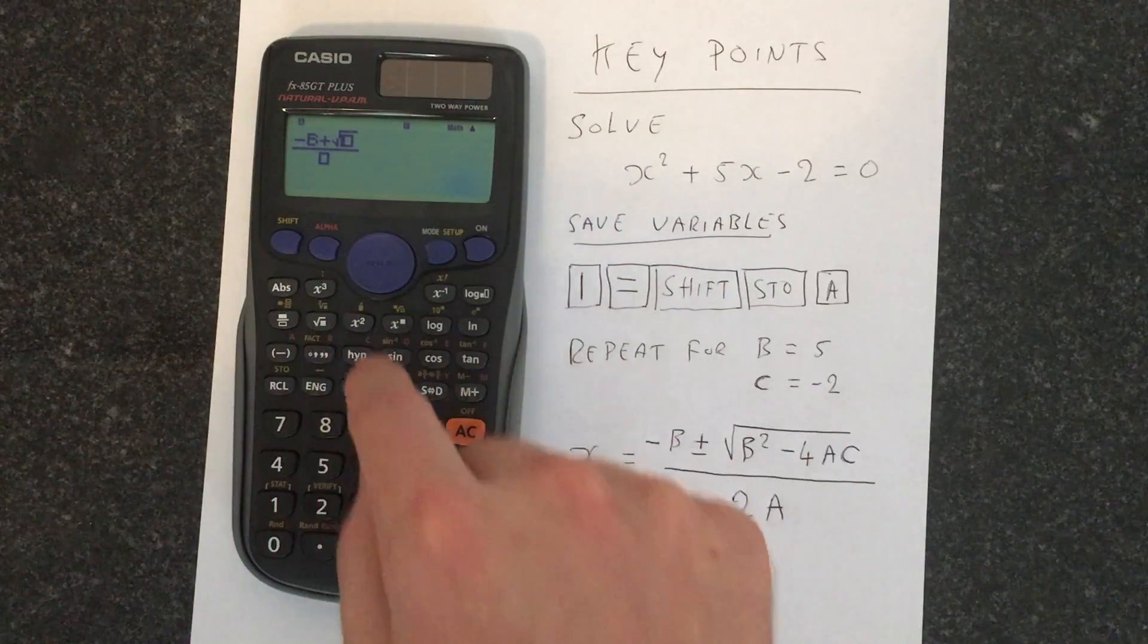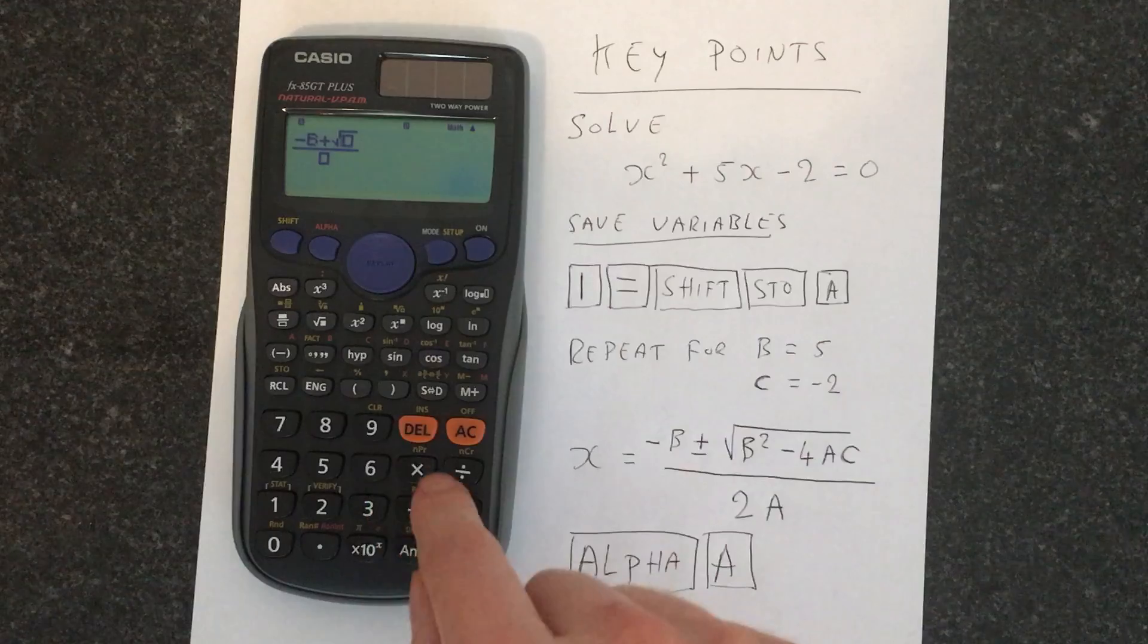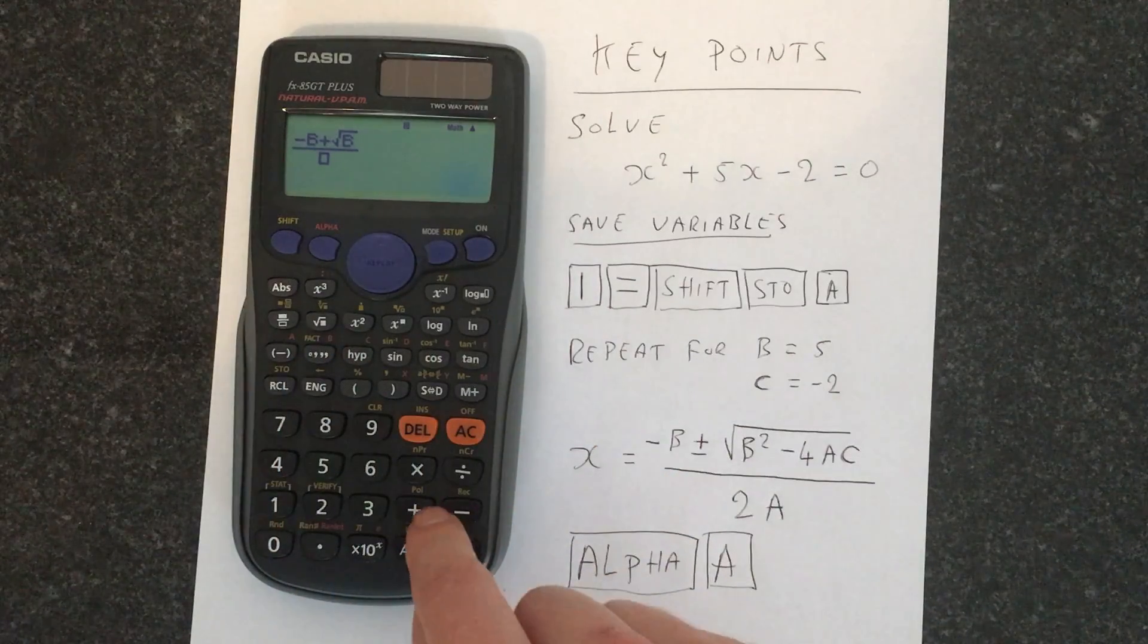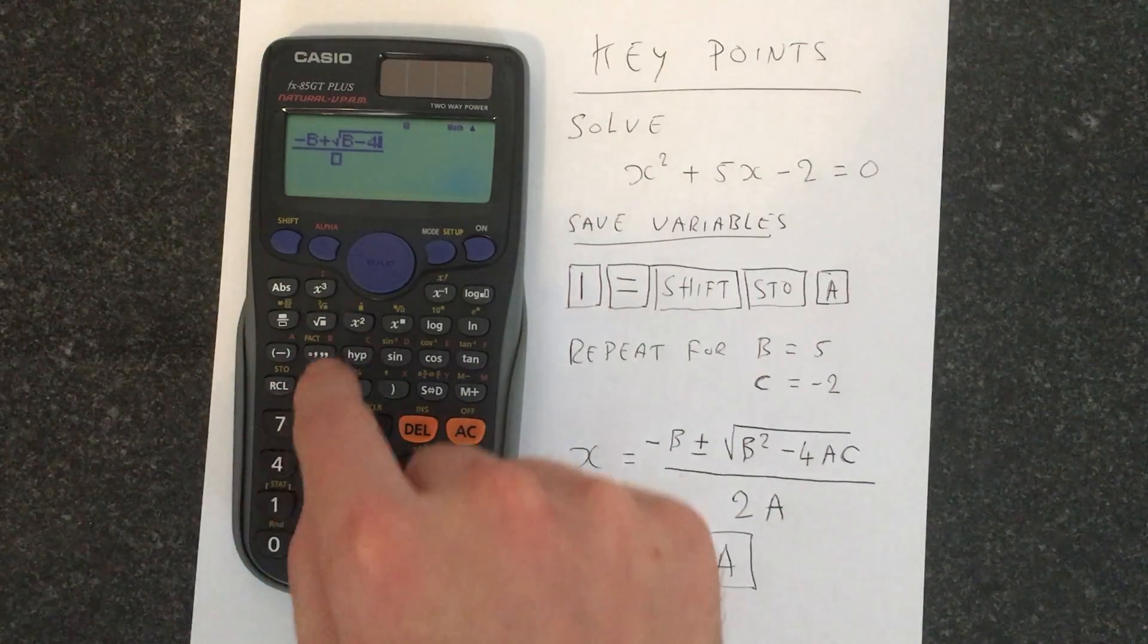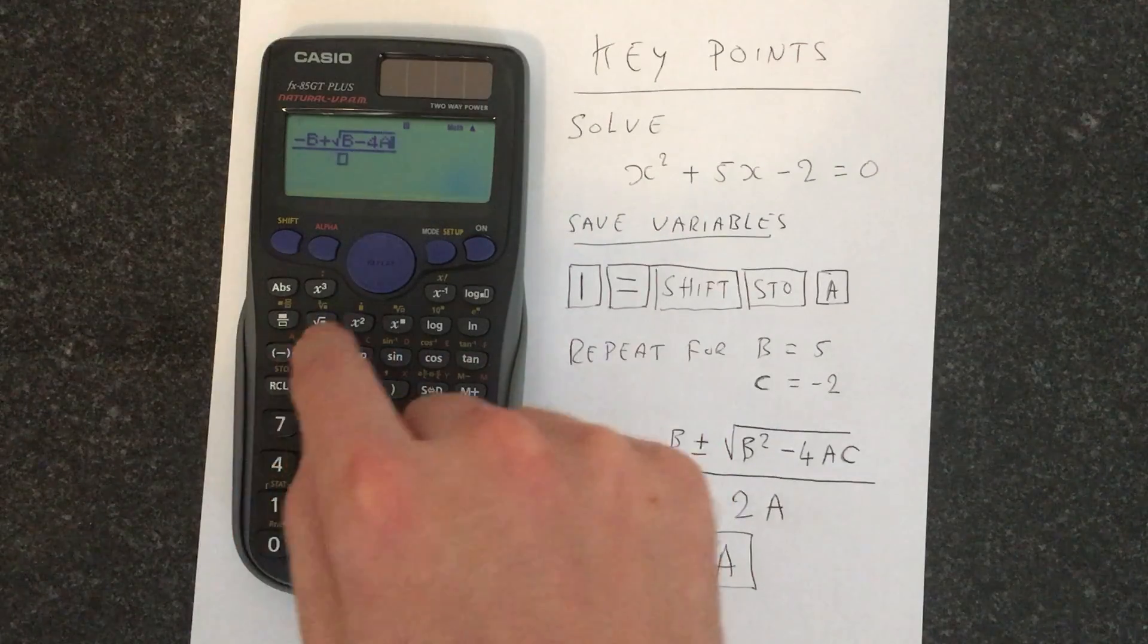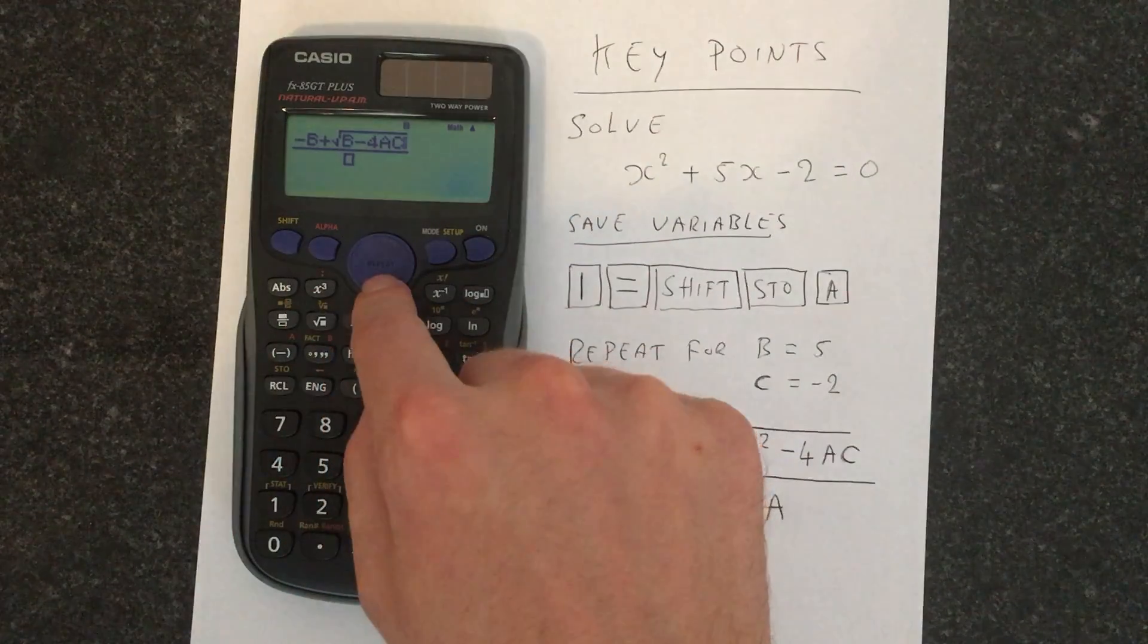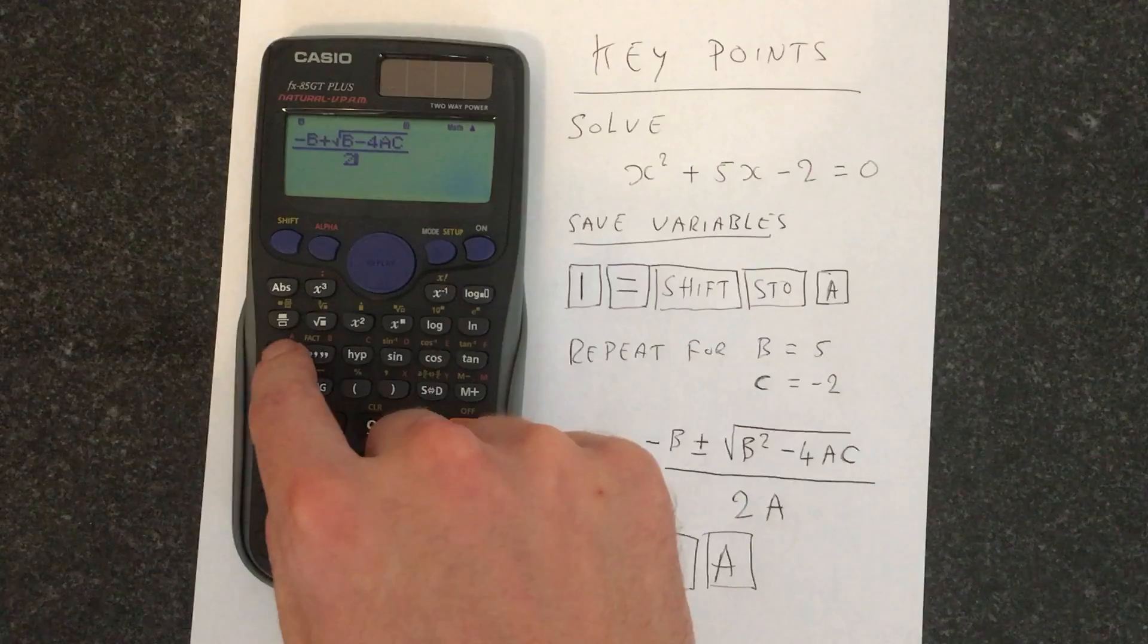we want alpha, then we want b squared minus 4 alpha, then we press a, alpha c divided by 2 alpha a, and then we press equals.